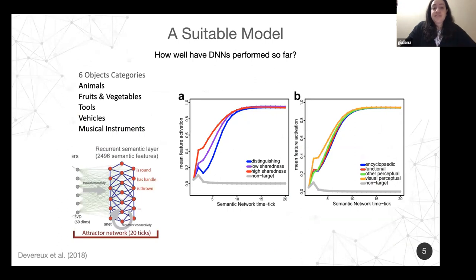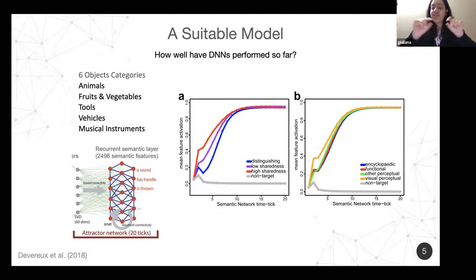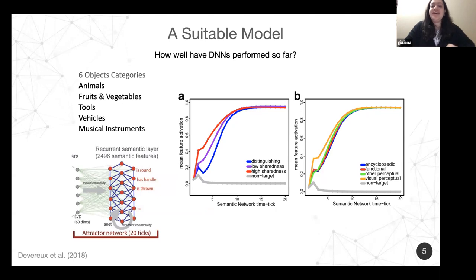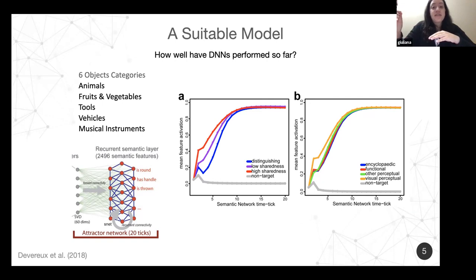He trained this model with six different categories: animals, fruits and vegetables, tools, vehicles, and musical instruments. He found that features with high sharedness — meaning more objects share that same feature — had their corresponding node activated early in time. Features that are specific to only one type of object were activated later in time. He also noted that visual properties tended to be activated early, followed by more encyclopedic or functional features of the different objects.